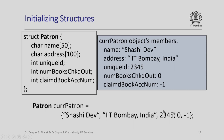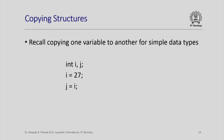After this initialization, the 'current_patron' object's members will be: name initialized to 'Shashidev', address to 'IIT Bombay, India', unique ID to 2345, num_books_checked_out to 0, and claimed_book_accession_number to -1. The order of initialization values must exactly match the order in which the members are declared in the structure definition. Similarly, for primitive data types we can copy the value of one variable to another — for example, declaring integers i and j, setting i to 27, then assigning j = i.